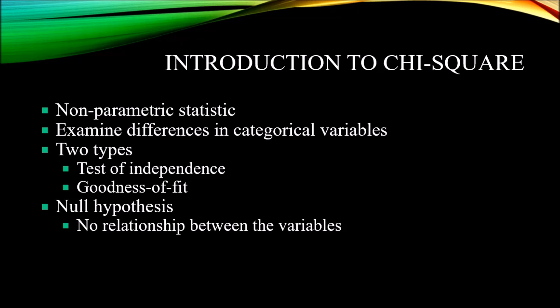The null hypothesis for the chi-square test is that there is no relationship between the variables, so the variables are in fact independent. The alternative hypothesis would be that the variables are dependent.